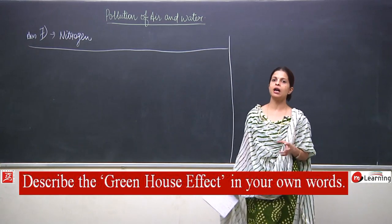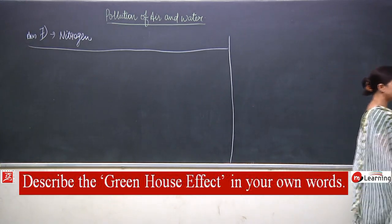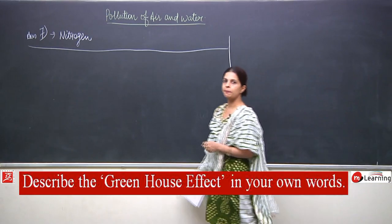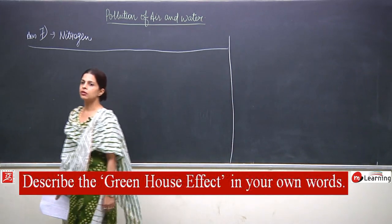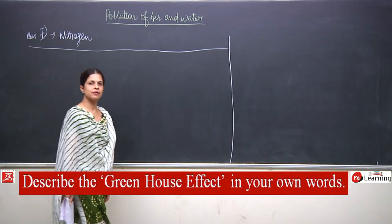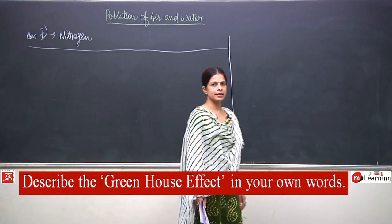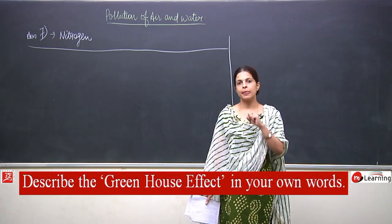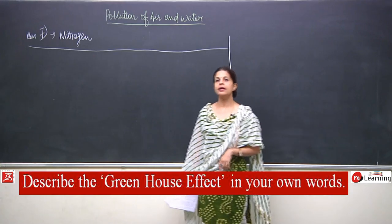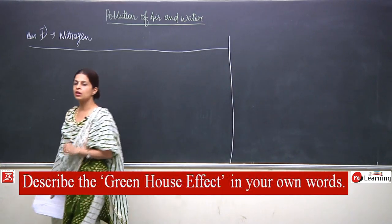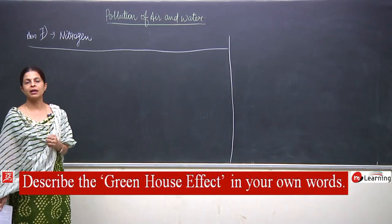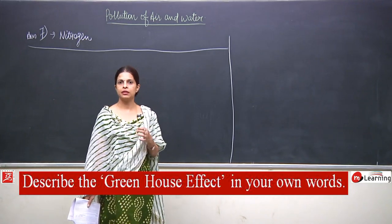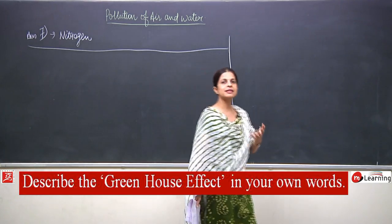Carbon dioxide, sulphur dioxide, and methane are all greenhouse gases. These gases trap the sunlight and do not allow it to escape. It becomes part of what increases the heat.